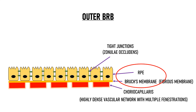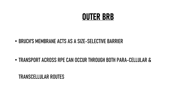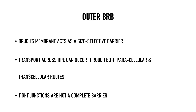As part of the outer blood retinal barrier, Bruch's membrane acts as a size-selective barrier — it blocks the diffusion of molecules of high molecular size but allows small molecules to pass through. Transport across the retinal pigment epithelium can occur through both paracellular and transcellular routes, although most transport occurs transcellularly. This transport can occur via diffusion, through an electrochemical gradient, or via ATP pumps. Tight junctions are not a complete barrier; they selectively block and allow the passage of different ions, thereby creating a concentration gradient that helps facilitate transcellular processes.